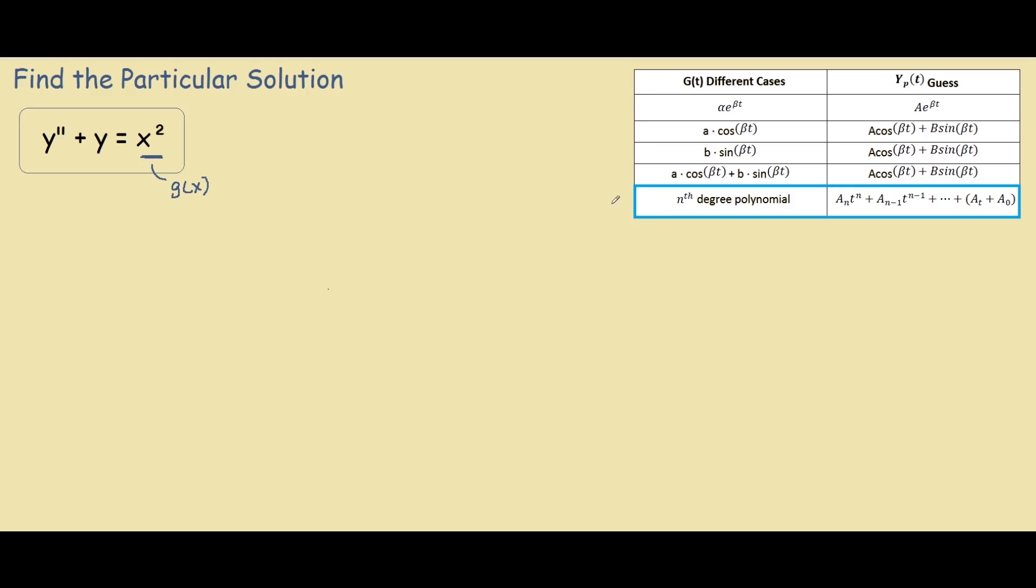And for our case, this is the nth degree polynomial of degree 2, and over here our table gives us a general form for each different case.